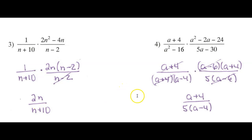Now similarly, in 4, I've got a lot of factoring to do. So in this term, this is a difference of squares. So that's going to factor to a plus 4, a minus 4. And I'm going to be able to cancel one of those a plus 4s.